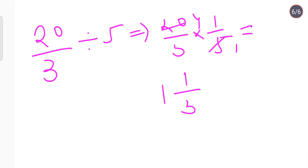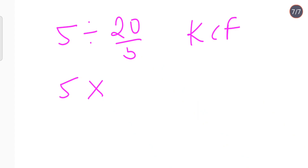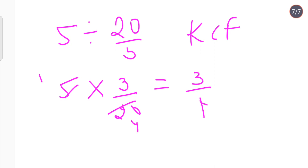What if we reverse it: 5 divided by 20 upon 3? Using KCF, keep 5 as it is, change the sign, and flip 20 upon 3 to 3 upon 20. This gives 5 into 3 upon 20 — cancelling 5 and 20 gives 1 and 4, so the answer is 3 upon 4. This is already a proper fraction, so no mixed form conversion is needed.